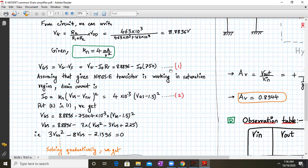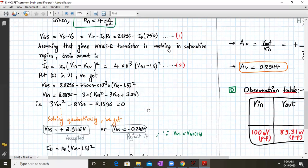Assuming the NMOS transistor is working in saturation region, the drain current is Id = Kn times (Vgs - Vt) squared. Substituting the values, we get Vgs = 8.896 minus 750 times 4×10^-3 times (Vgs - 1.5)^2. Working through the algebraic steps yields a quadratic equation: 3Vgs² - 8Vgs - 2.1396 = 0.